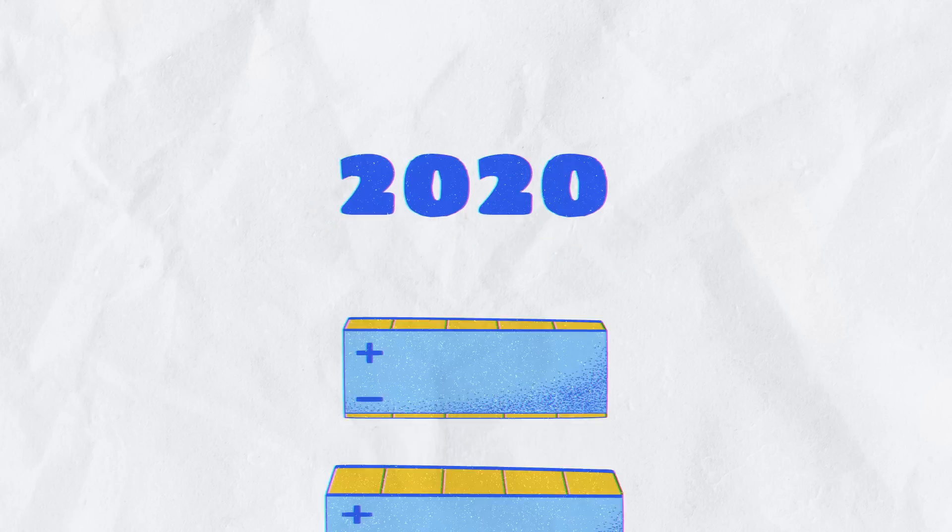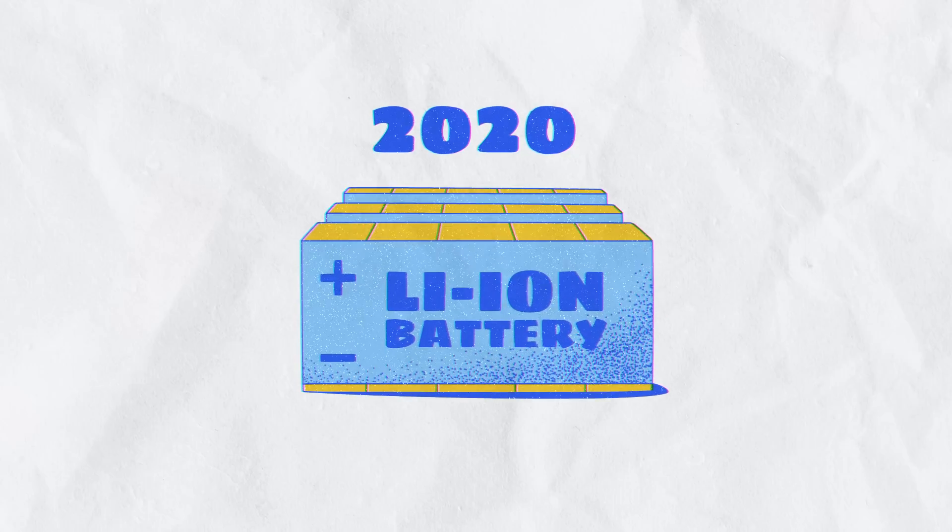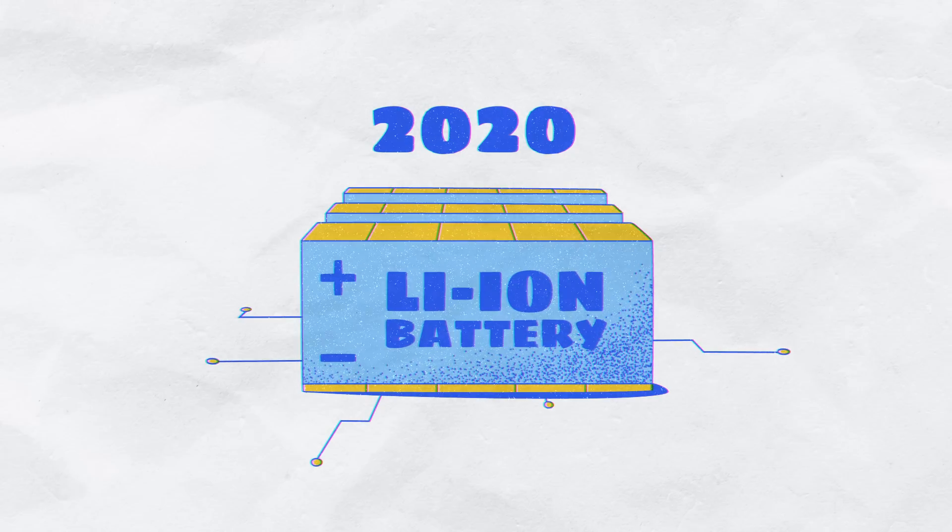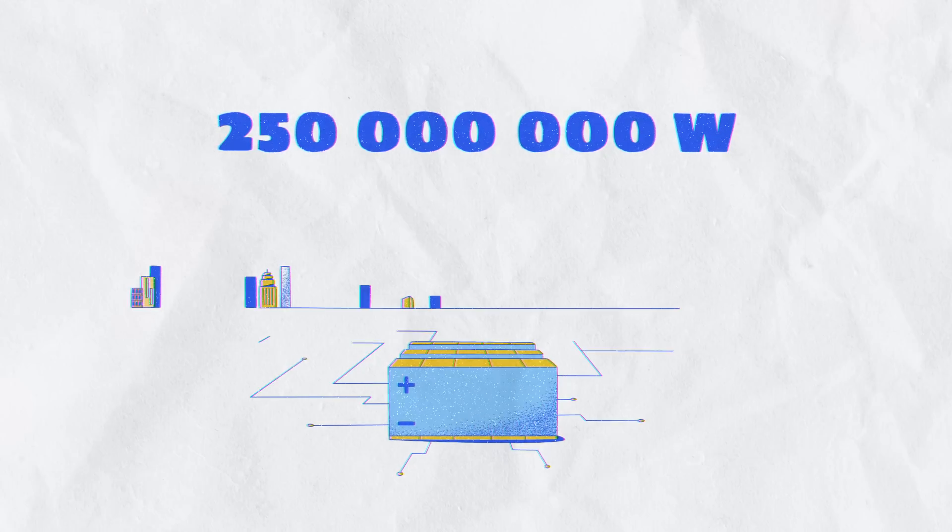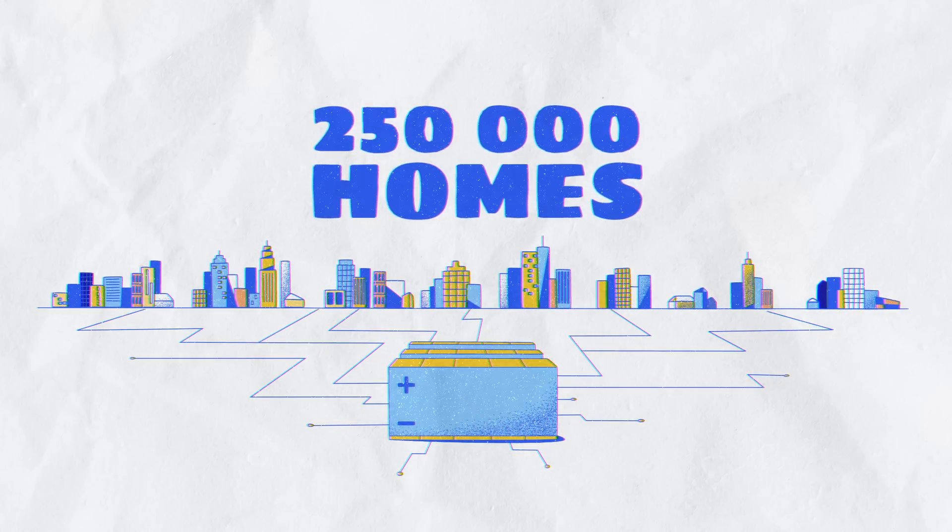As of 2020, the world's biggest lithium-ion battery is hooked up to the Southern California power grid and can provide 250 million watts of power, or enough to power about 250,000 homes.